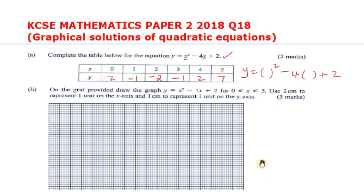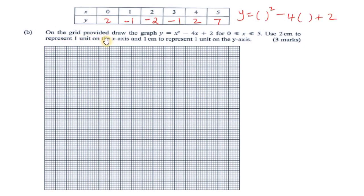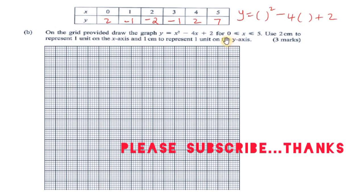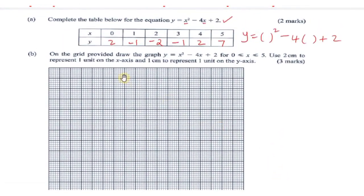That completes part A. For part B, we use the grid provided to draw the graph for x values between 0 and 5, using the table we just completed. We set up the x-axis and y-axis. For the x-axis there are no negative values, so we leave a small space for the negative side and allocate more space for the positive values.